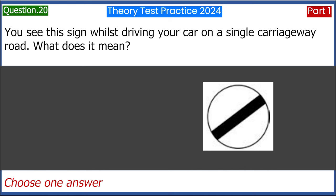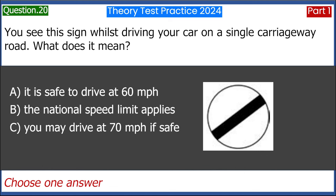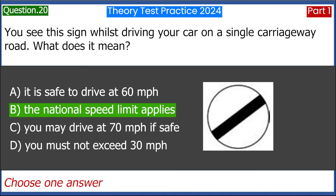You see this sign whilst driving your car on a single carriageway road. What does it mean? A. It is safe to drive at 60 miles per hour. B. The national speed limit applies. C. You may drive at 70 miles per hour if safe. D. You must not exceed 30 miles per hour. Answer: B. The national speed limit applies.